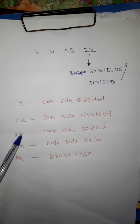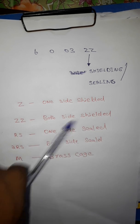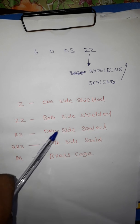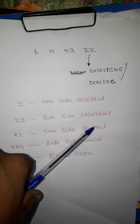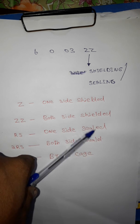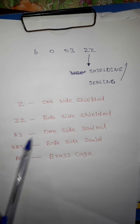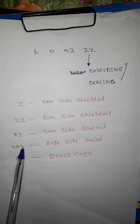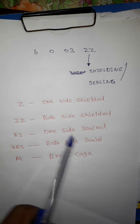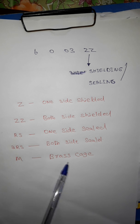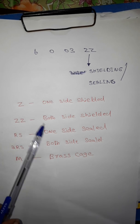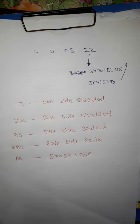This is the RSN. One side is sealed — it is sealed with plastic. It is sealed with rubber. One side is sealed. This is the RSN — it is sealed with M. Now you can use the RSN. Here is the RSN.